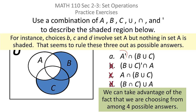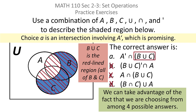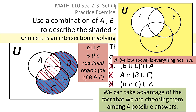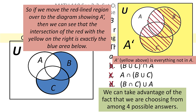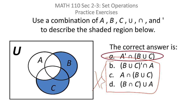Looking at answer A, that makes sense because you're taking A complement — things that aren't in A — and intersecting them with where B and C are unioned together. To verify: B union C is the hatched red area. A complement is everything that's not in A. If you take the things that aren't in A and intersect them with that red area, all you're left with is the blue region, which matches. Answers B, C, and D were eliminated early on because they all involved set A, and nothing in A was shaded.